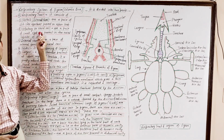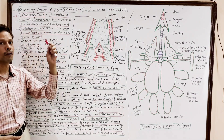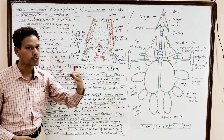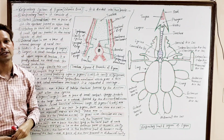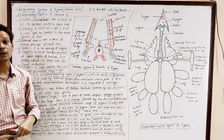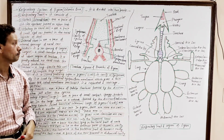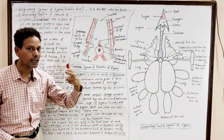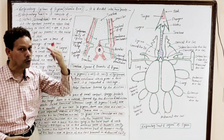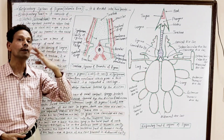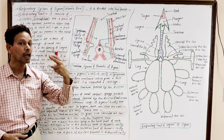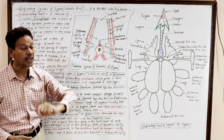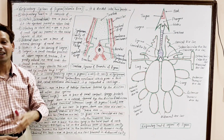The second part of the respiratory tract is a pair of olfactory sacs or nasal chambers. These are a pair of small sac-like structures present in the nasal capsule of the skull. The olfactory sacs open internally into the buccopharyngeal cavity by a pair of slit-like apertures called internal nares.